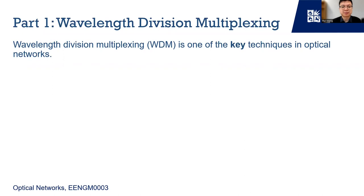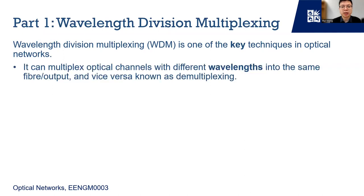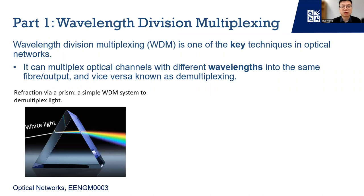Wavelength division multiplexing is perhaps one of the most important technologies in optical networks. What it does is multiplex optical signals with different wavelengths into the same fiber or port, and demultiplex signals of different wavelengths from one port to different ports. I am sure you all know what a prism is. A prism can be imagined as a basic WDM system. As light passes through a prism, it slows and bends, but different wavelengths bend at different angles. This separates light into different wavelengths, forming a rainbow of colors, as shown here.